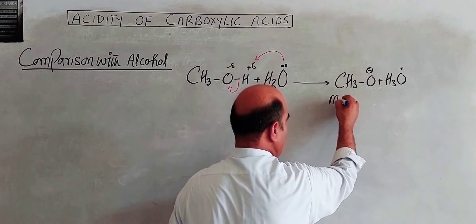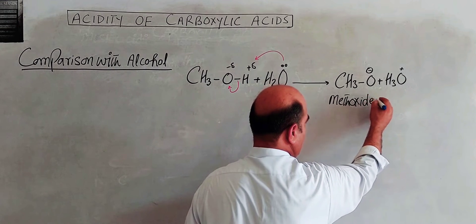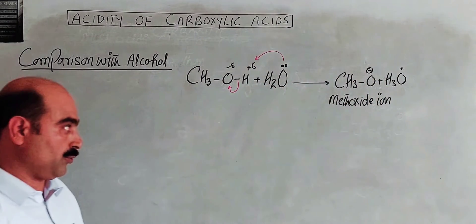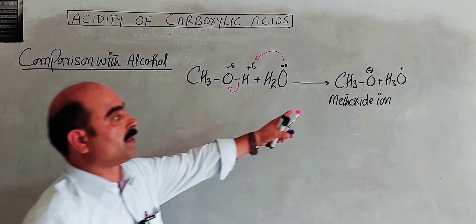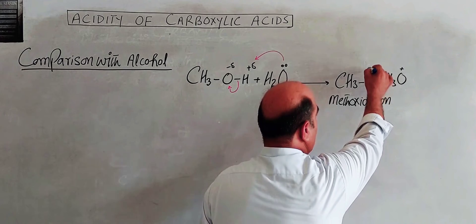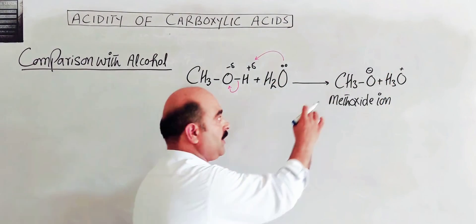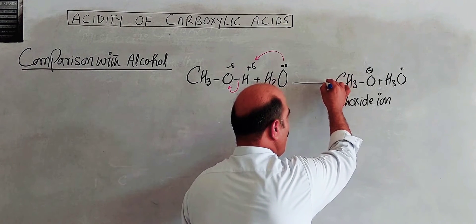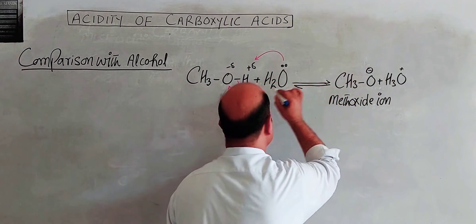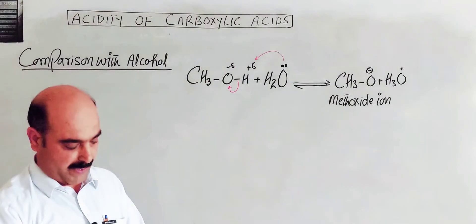The product formed is CH3O⁻ plus H3O⁺. CH3O⁻ is called the methoxide ion — methyl plus oxygen. The methoxide ion has no resonance. Because it has no resonance, the electron is localized on oxygen. Since it is localized, the negative charge easily attracts a hydrogen ion back, converting methoxide and hydrogen ion back to methyl alcohol — meaning the acidity is less.